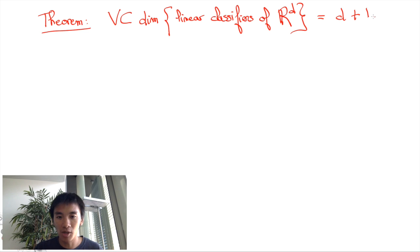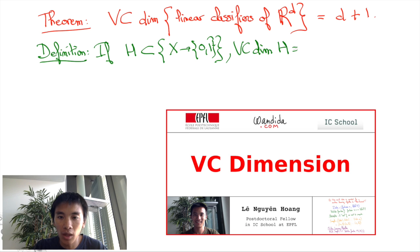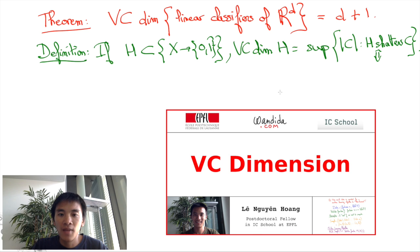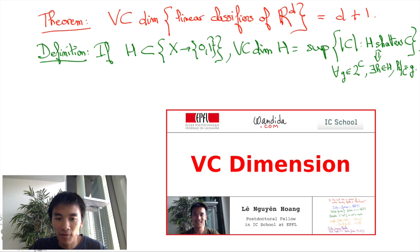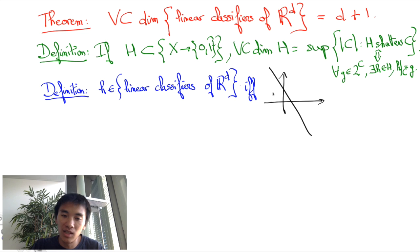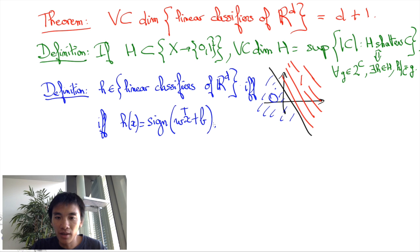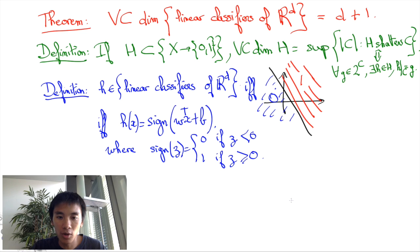Let me very quickly recall the definition of VC dimension and linear classifiers. The VC dimension of a hypothesis class H, where H is a subset of the set of 0-1 functions of a feature set X, is the cardinality of the largest subset C of X that H shatters, i.e., such that any labeling of C is achieved by some element h of H. If you did not understand this, please check out the video I made on the VC dimension. A linear classifier in R^d is the set of ways to draw a cutting hyperplane in R^d that separates the space into 0-labels and 1-labels. Equivalently, it can be regarded as the set of functions of the form sign(w^T x + b), where the sign function assigns the 0-label to negative real numbers and the 1-label to non-negative ones.